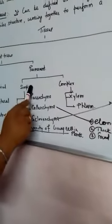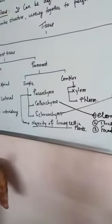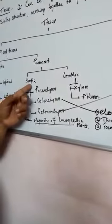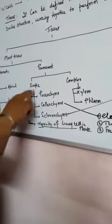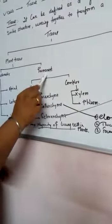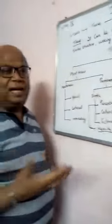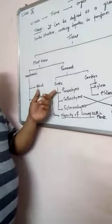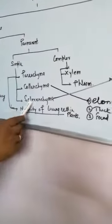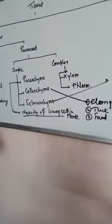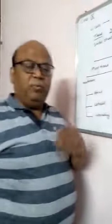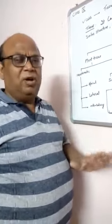In permanent tissue, there are two types: simple and complex. Simple permanent tissue is not very complicated; complex is more complicated. Simple permanent tissue can be divided into three types: parenchyma, colenchyma, and sclerenchyma. Your pronunciation should be correct — it is parenchyma, colenchyma, sclerenchyma. Read and pronounce them two or three times and it will become easy.